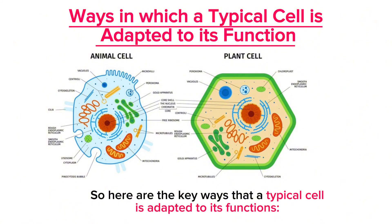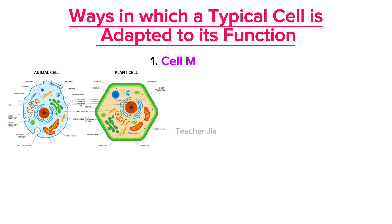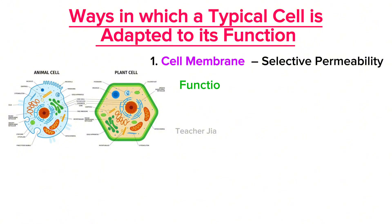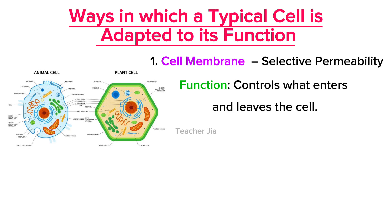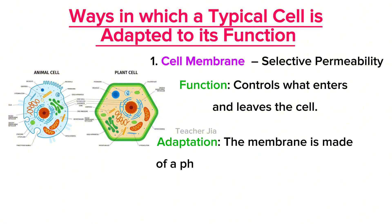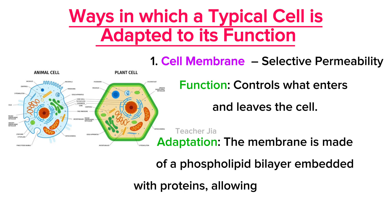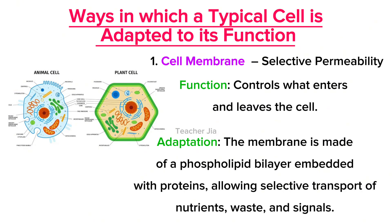The first one is the cell membrane, and the major adaptation is selective permeability. Its function is to control what enters and leaves the cell. In terms of adaptation, the cell membrane is made up of a phospholipid bilayer embedded with proteins, allowing selective transport of nutrients, waste, and signals.